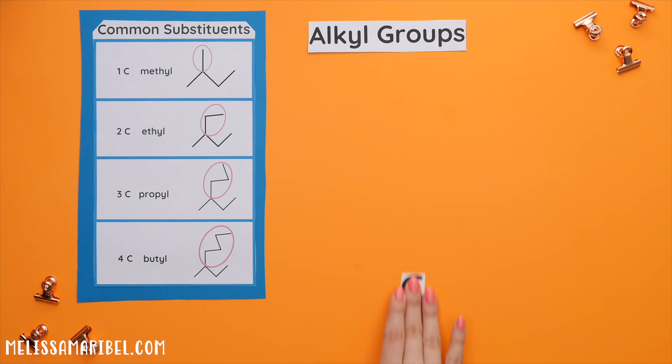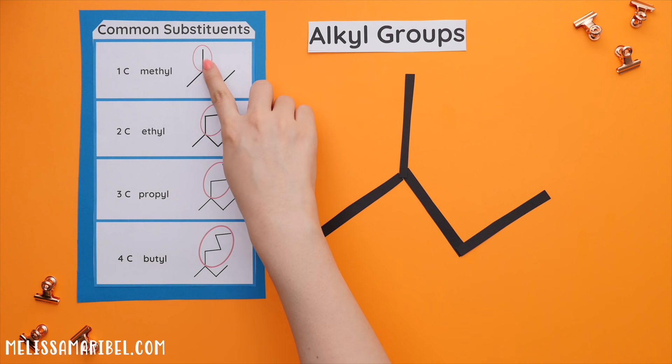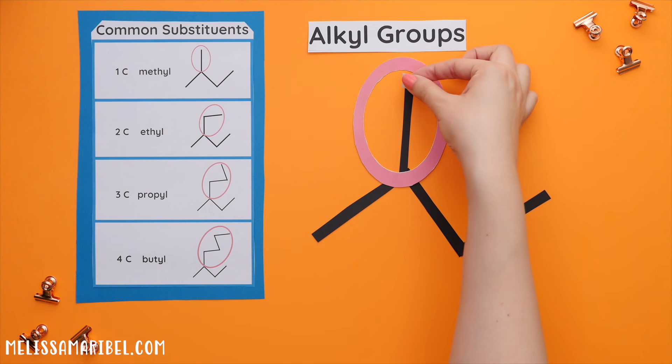An alkyl group is made up of only carbons and hydrogens. It is also defined as an alkane that is missing one hydrogen. The first alkyl group is methyl. This has only one carbon.